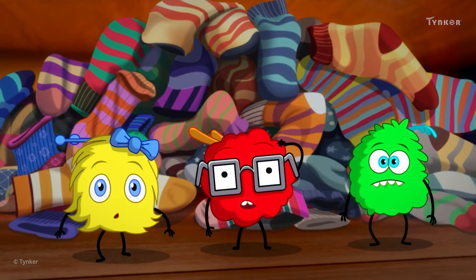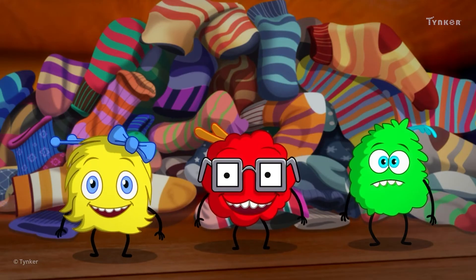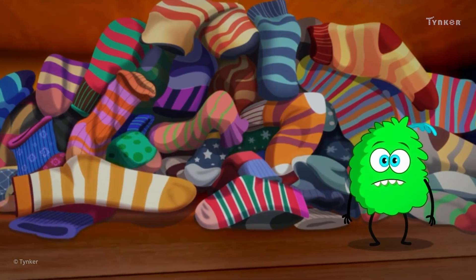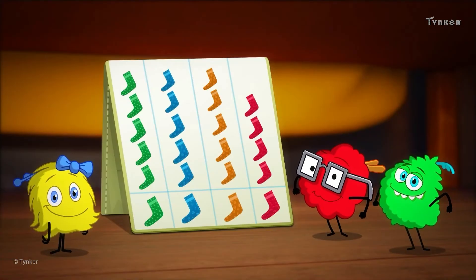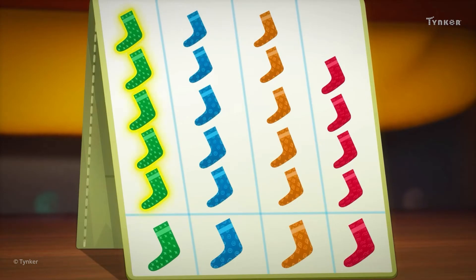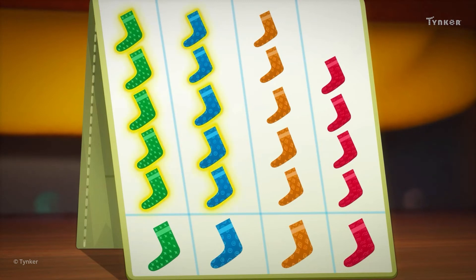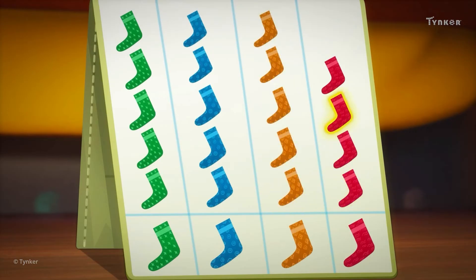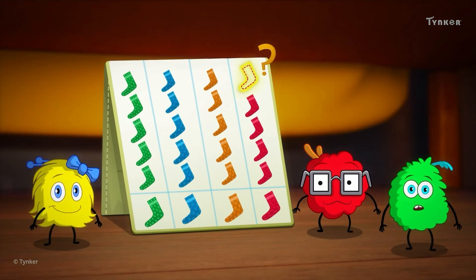Now that you know about collecting data and organizing it, why don't you collect the data for the socks in your sock nest? Wonderful work, dust bunnies! Let's count how many socks there are for each color. There are five green socks, and there are five blue socks as well. That looks like a pattern. There are five orange socks too. There are only four red socks, which means a red sock is missing from the sock nest.